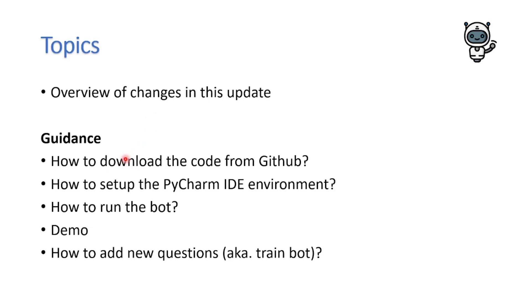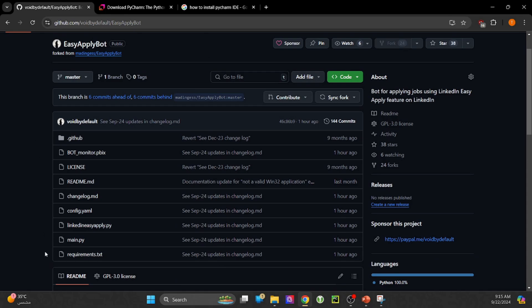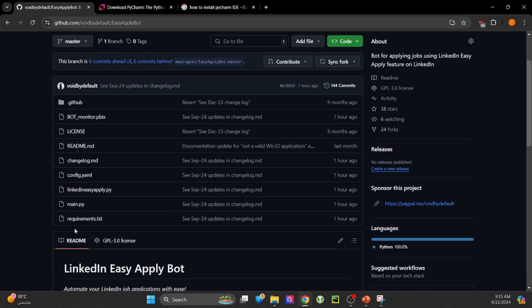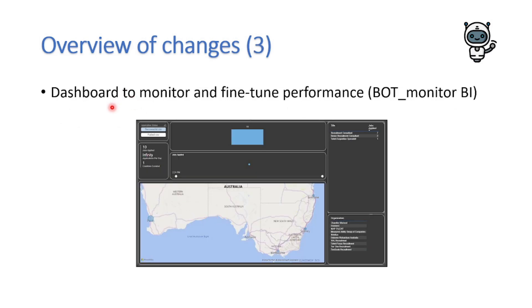Let's start with the key changes. Session save feature — no more logging in every time. Once logged in, you won't need to sign in again unless you log out. Simplified directory structure makes running the bot and auto-detecting dependencies smoother. Previous changes for the Windows executable version are now scrapped. Dashboard updates: the job-applied counter now functions correctly, and the dashboard has been renamed for easier recognition.